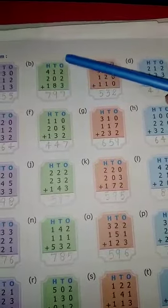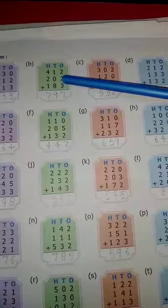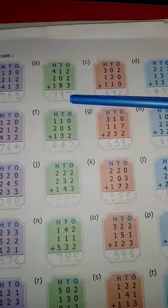So first we add 1's column. 2 plus 2 plus 3 is equal to 7.